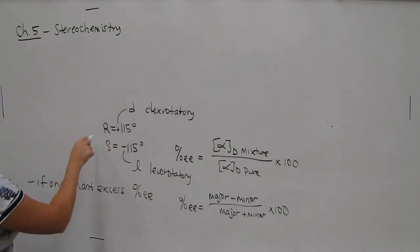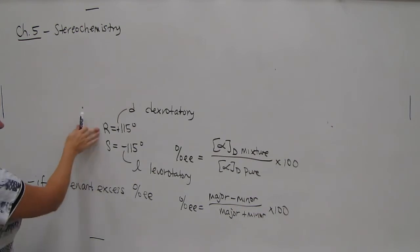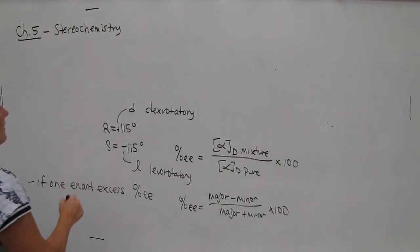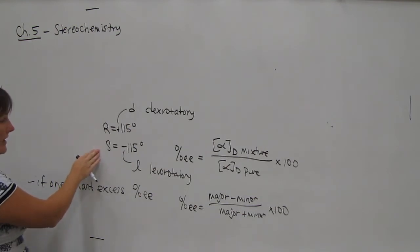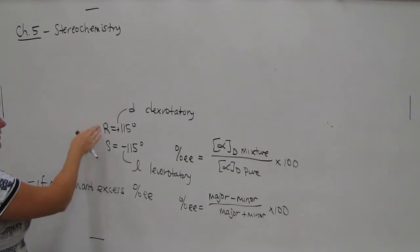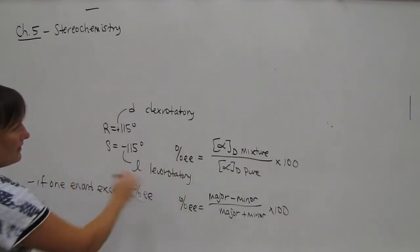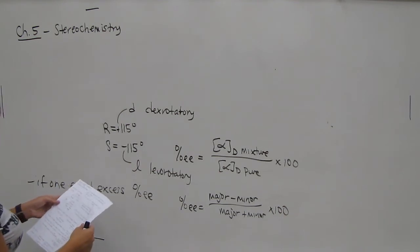If we have a mixture of R and S, but we have more of the R, then our rotation is going to be in the plus direction, but it's going to be smaller than 115. For instance, if we had 60% R, we would expect a positive rotation. If we had 60% S, we would expect a negative rotation. So whichever you have more of, you'll be that direction. And you can find out the exact number using these formulas.